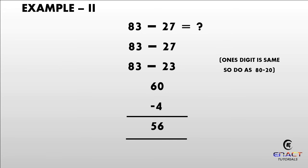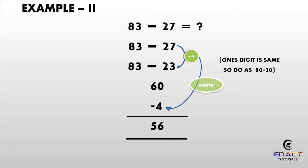Example number 2: 83 minus 27. Subtracting 4 from 27, it will become 23. As you can see, the ones digit is the same, so directly subtract 83 minus 23. Hence our answer is 60. Keeping minus 4 the same and subtracting 60 minus 4, our answer will become 56.